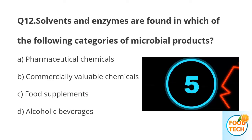Question number 12. Solvents and enzymes are found in which of the following categories of microbial products? A. Pharmaceutical chemicals. B. Commercially available chemicals. C. Food supplements. D. Alcoholic beverages.